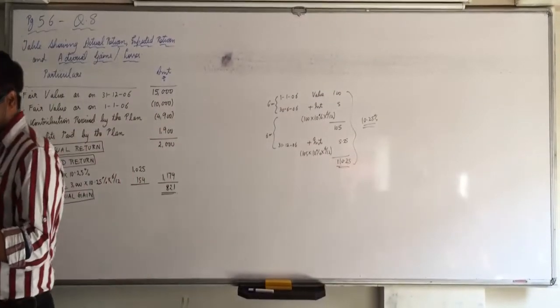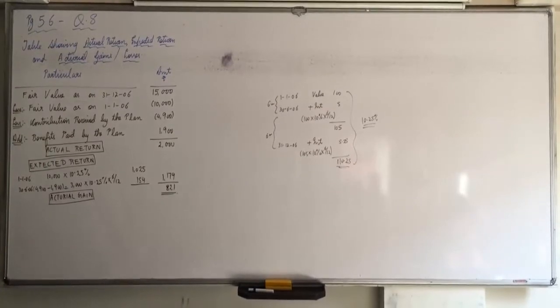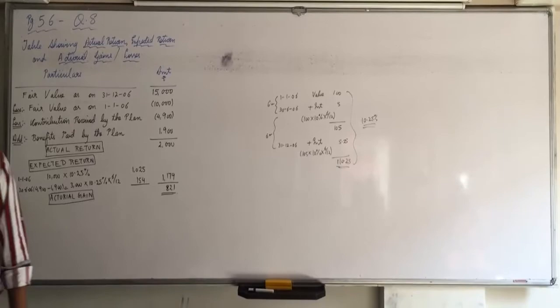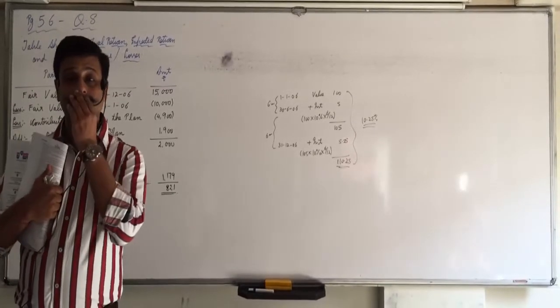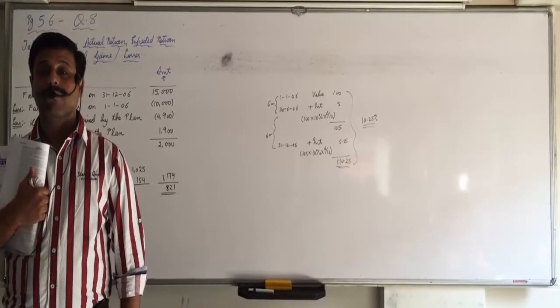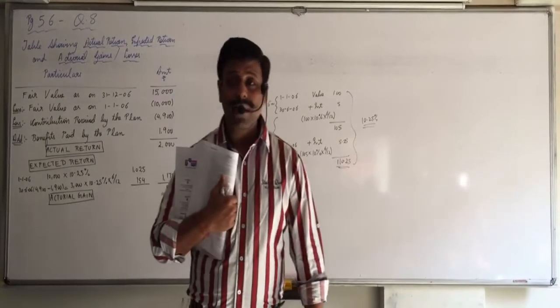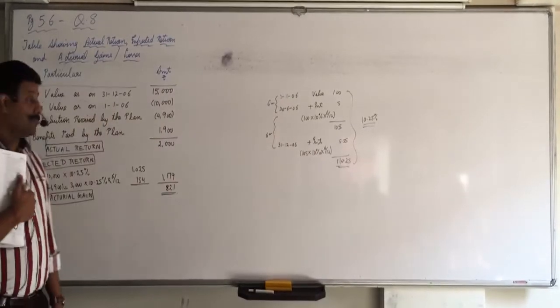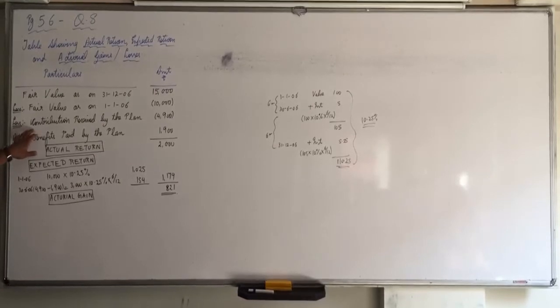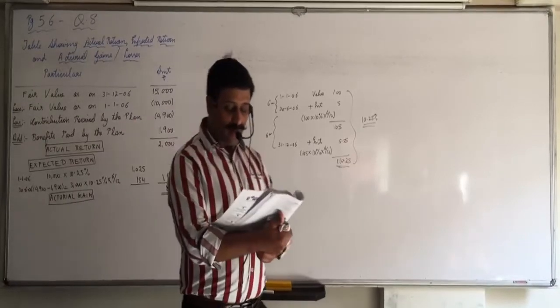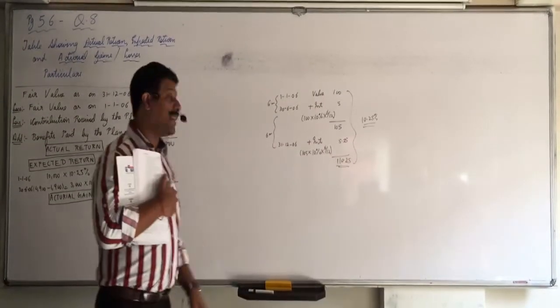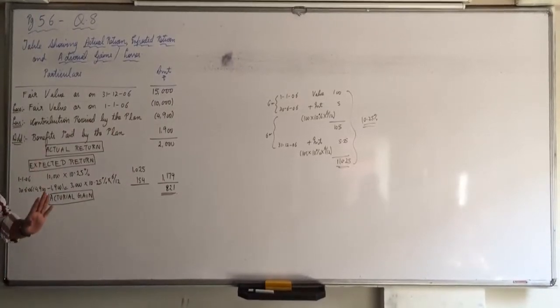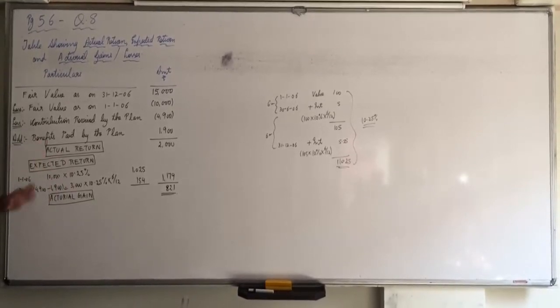The employer's contribution to the plan during the year was 204, and benefits paid were 578. Calculate the actual return on plan assets. Here expected return is not asked and it is not given also. Like in the previous question 10.25% expected rate of return was given. So here you have to count only up till actual return. Any confusion in this?